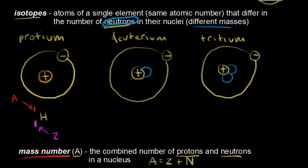For deuterium, it's hydrogen so we put H. There's still one proton in the nucleus, so the atomic number subscript is one. The mass number is the combined number of protons and neutrons: one proton plus one neutron equals two, so the superscript is two. For tritium, it's still hydrogen with atomic number one, and one proton plus two neutrons gives a mass number of three, so the superscript is three.